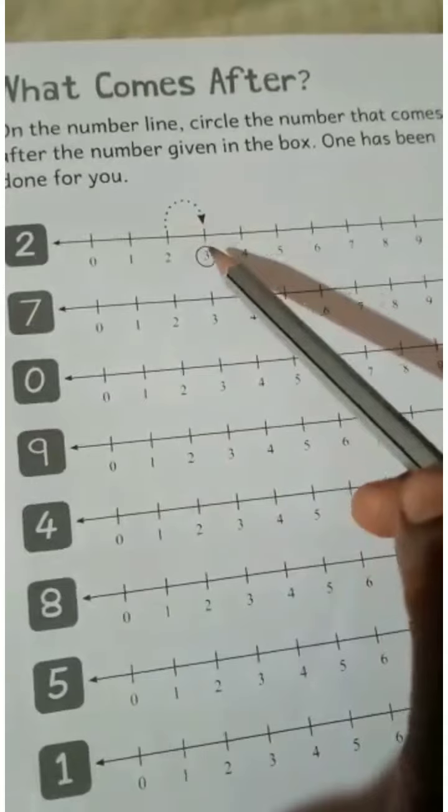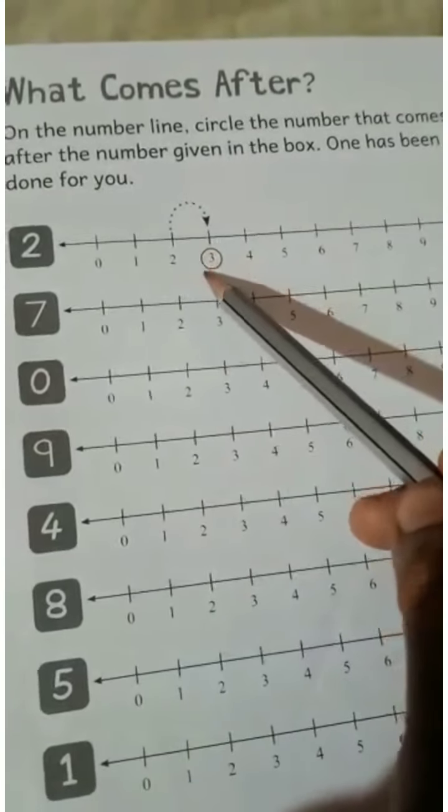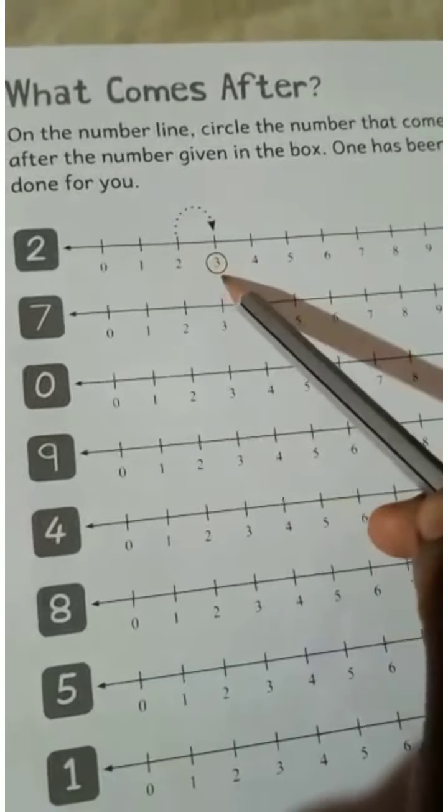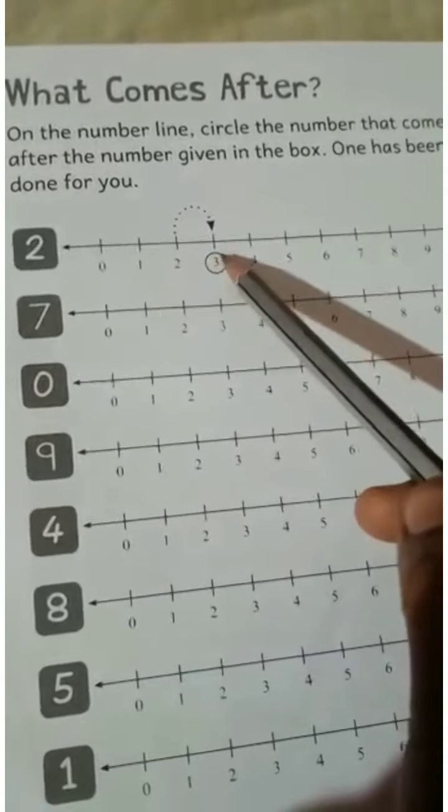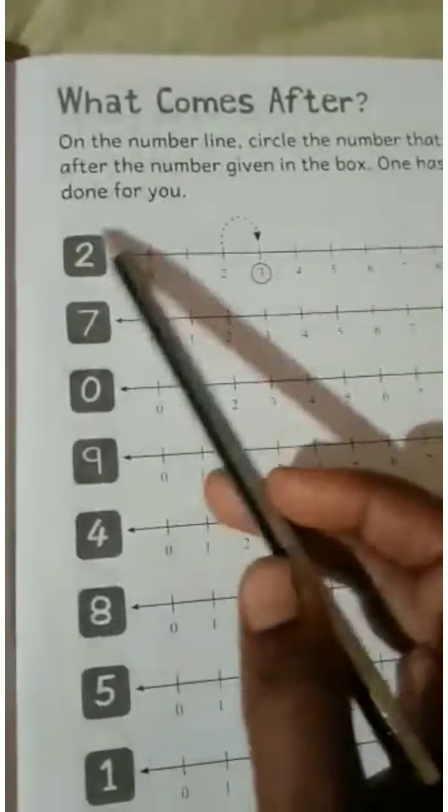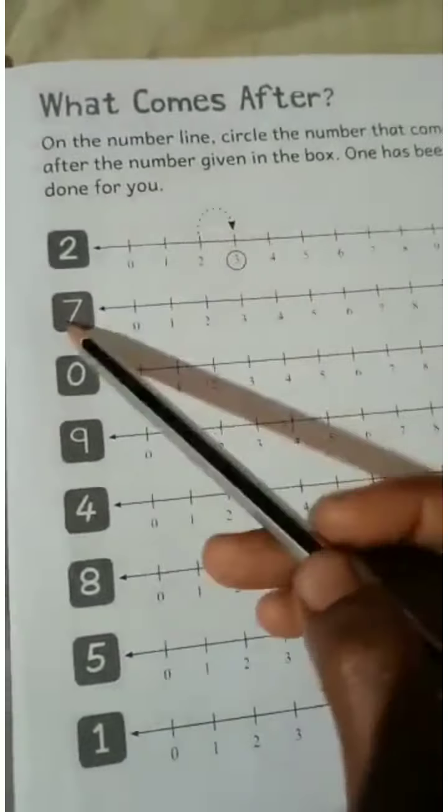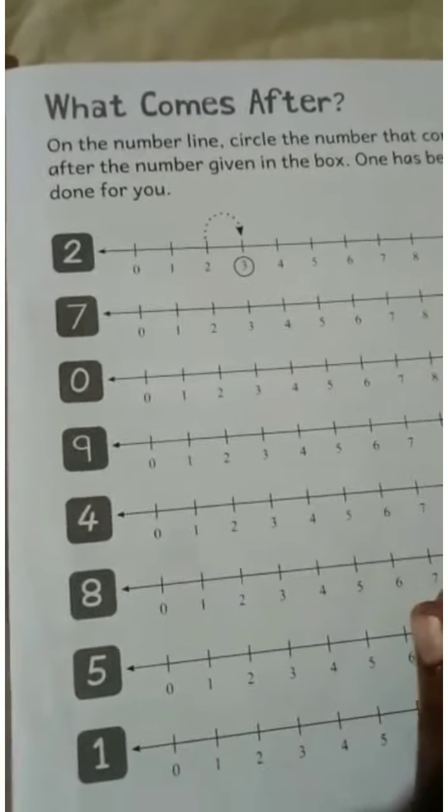Circle is given in the box. We have to find the next number. One has been done for you. We will do all of them one by one.